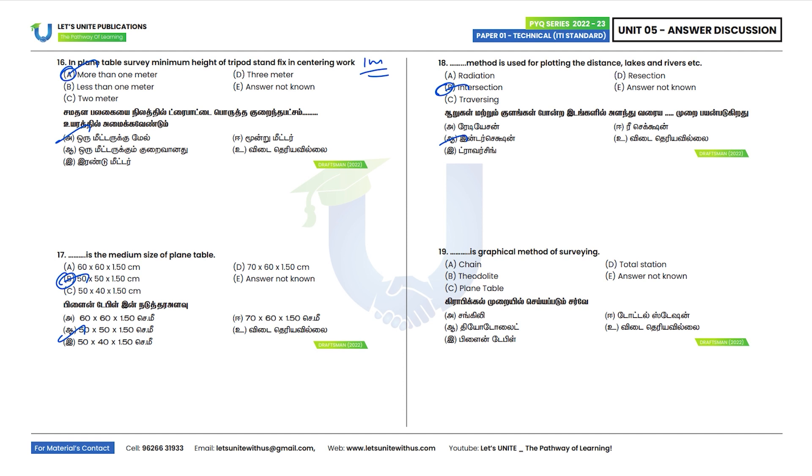Nineteenth question: Which is a graphical method of survey? The plane table method is a graphical method survey. Option C is the correct answer.